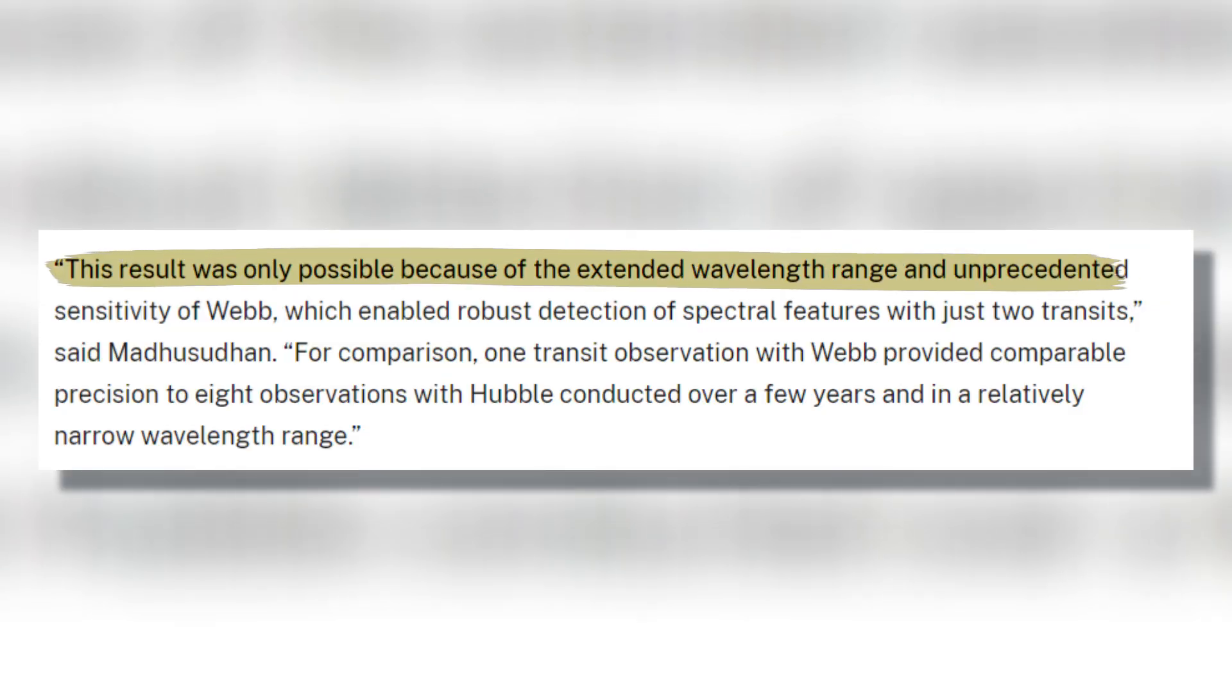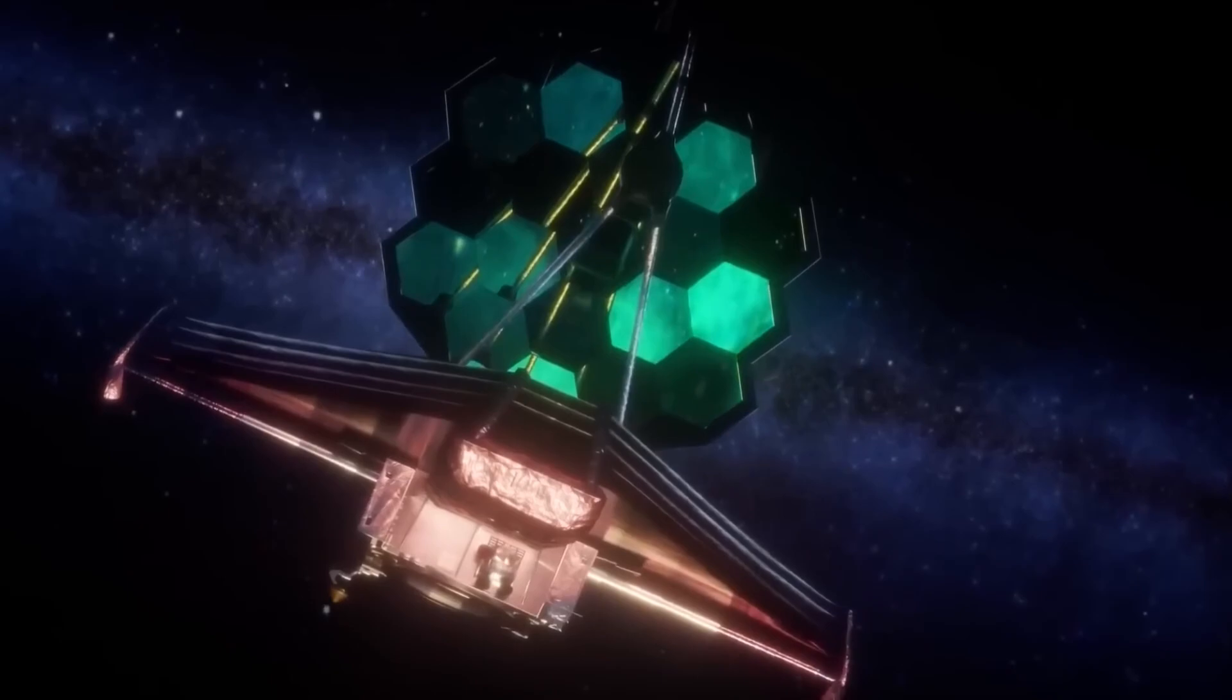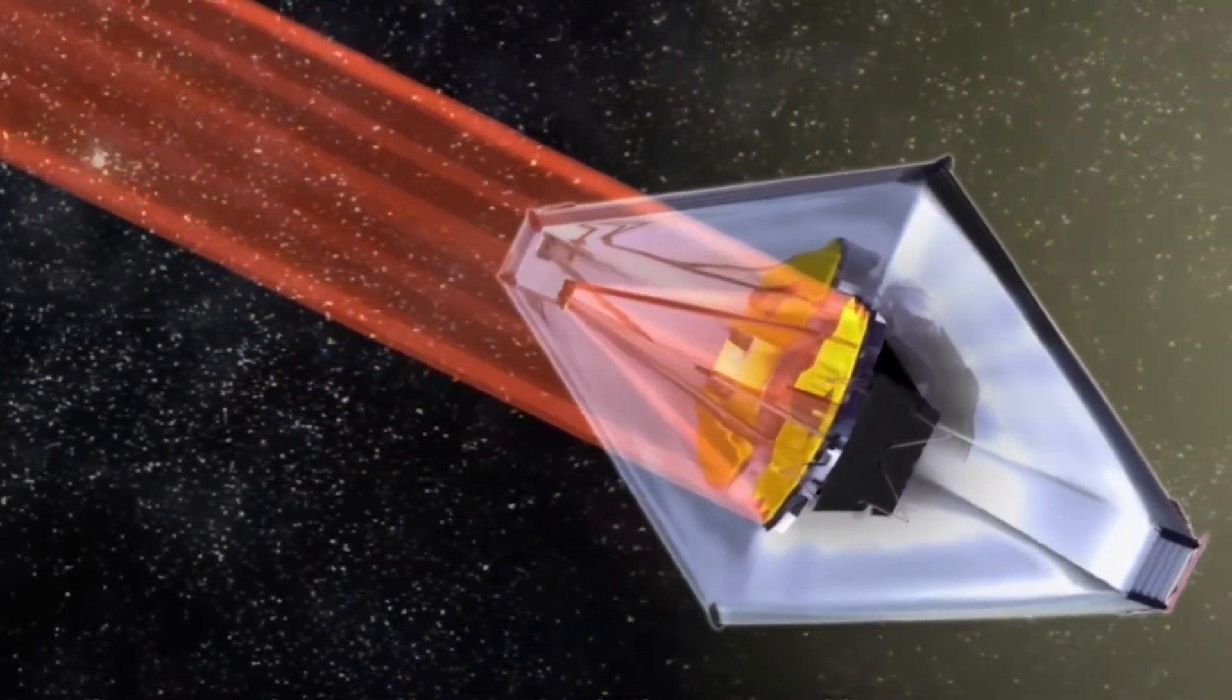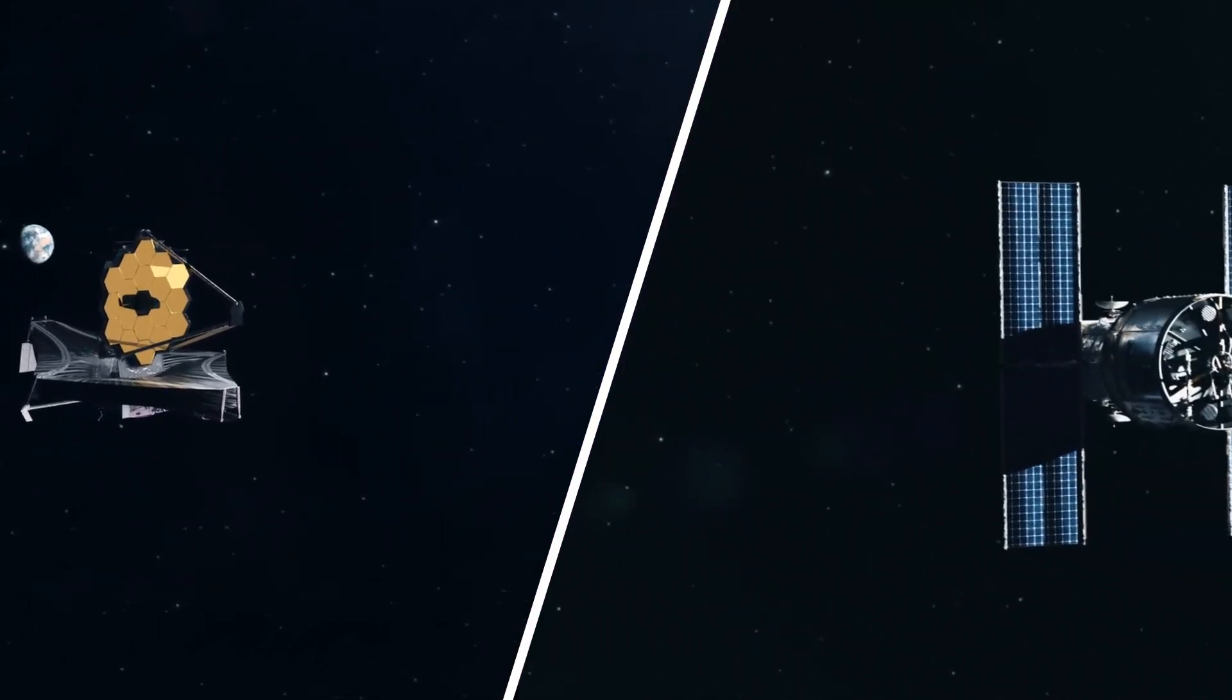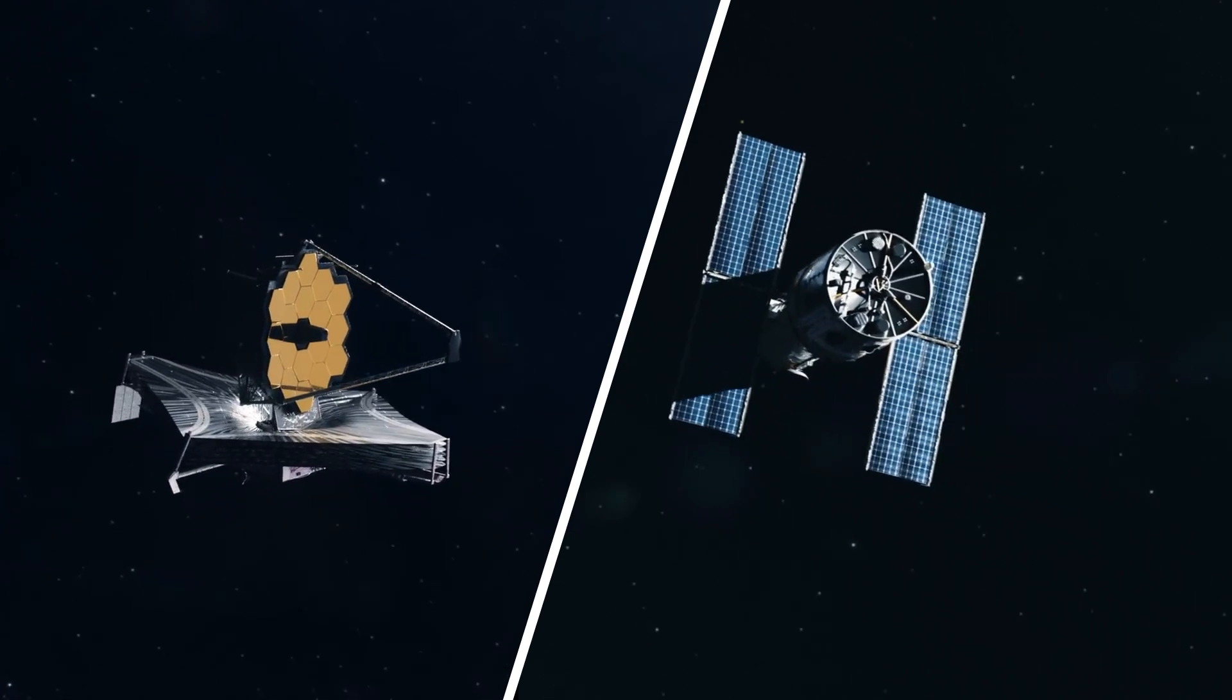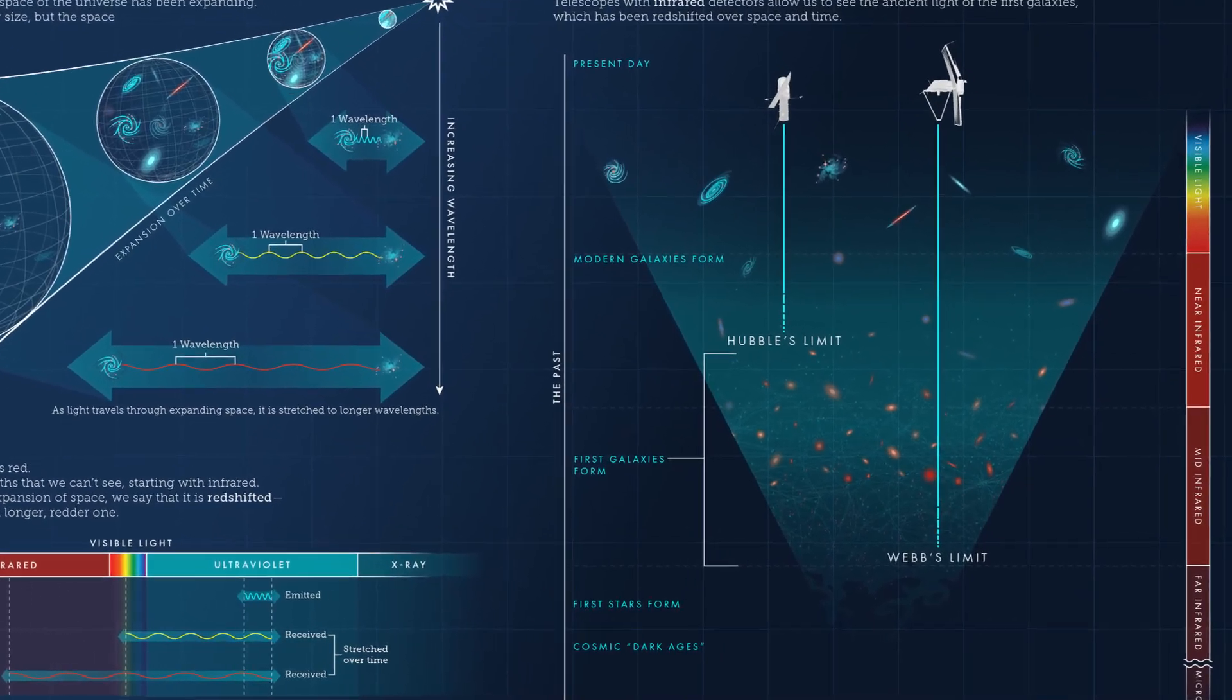This result was only possible because of the extended wavelength range and unprecedented sensitivity of the James Webb Space Telescope, which enabled robust detection of spectral features with just two transits, Madhusudan said. One transit observation with James Webb Space Telescope provided comparable precision to eight observations with Hubble telescope conducted over a few years and in a relatively narrow wavelength range.